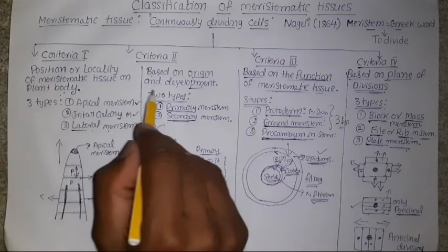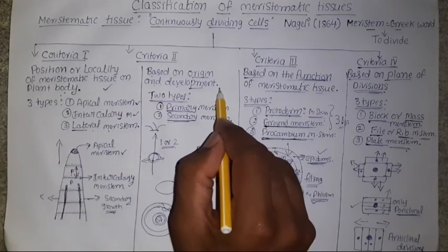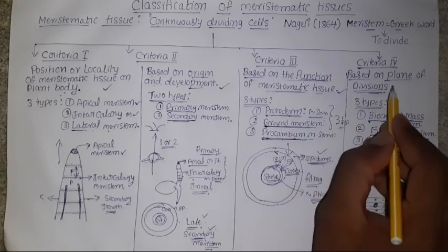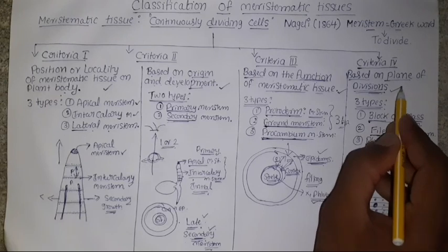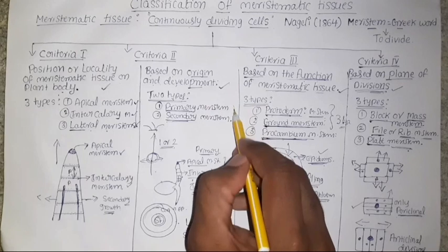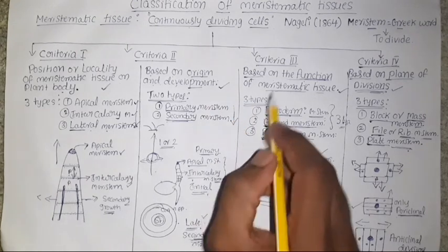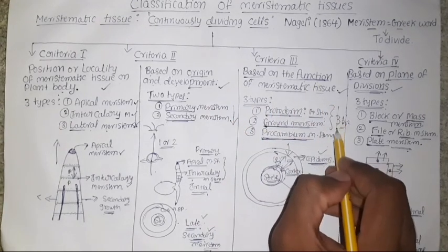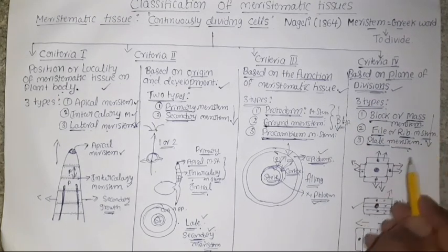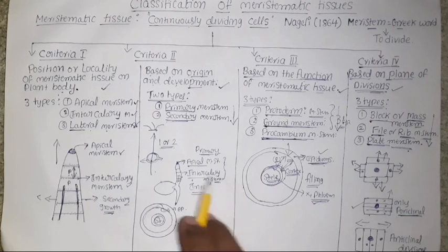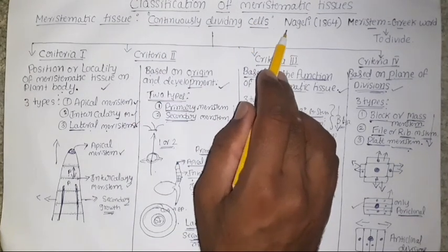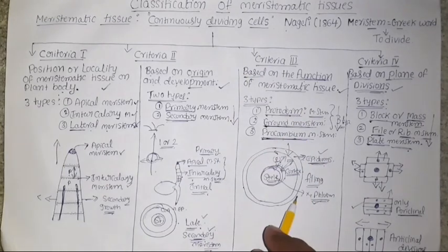To summarize: the first criteria is based on locality, giving three types; the second is based on origin, giving two types; the third is based on function, giving three types; and the fourth is based on the plane of divisions, giving three types of meristematic tissues. This is all about meristematic tissues and their classification. Thank you.